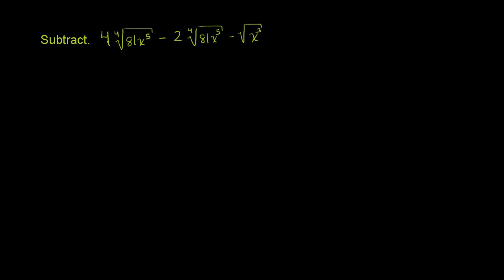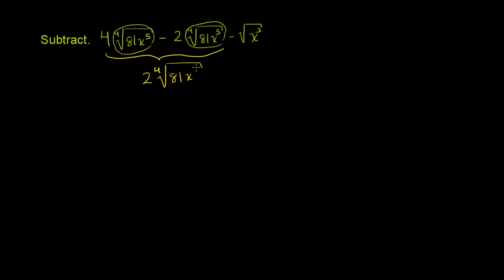You can just say: I have 4 of something — I'll circle it in yellow — and I want to subtract 2 of these things. These are the exact same things; they're the 4th root of 81x to the 5th. So if I have 4 lemons and I want to subtract 2 lemons, I'm going to have 2 lemons left over. So these terms simplify to 2 times the 4th root of 81x to the 5th. I got this 2 just by subtracting the coefficients: 4 of something minus 2 of something equals 2 of that something.